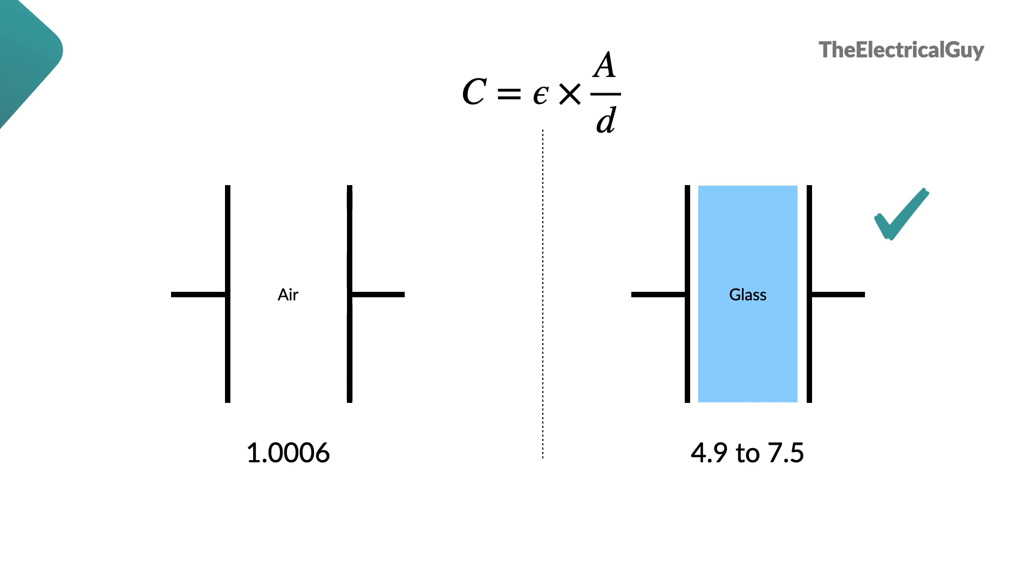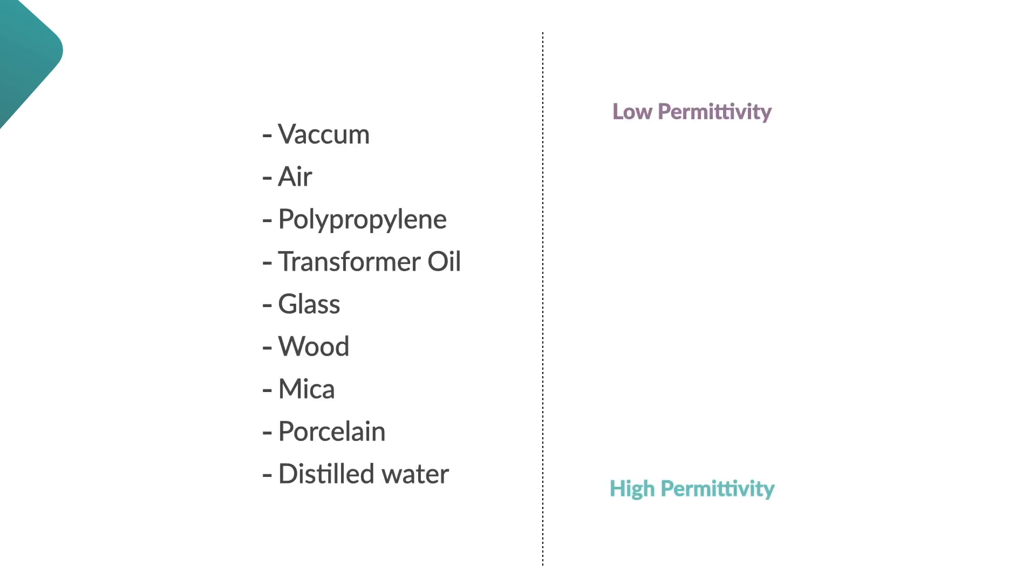So definitely the capacitance of a capacitor with glass as a dielectric will be more than the air. Vacuum and air has the least value of permittivity. Then the material like polypropylene, transformer oil, glass, wood,